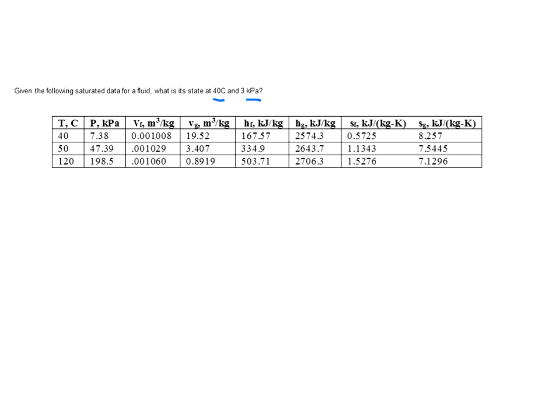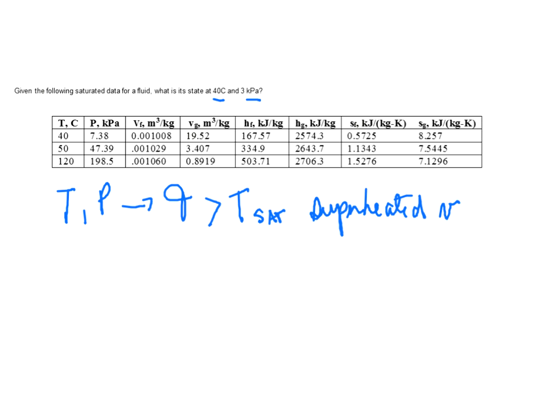Let's see this with an example. Here we have a fluid — in this case H2O — and it's asking what is the state or the phase at 40 degrees Celsius and 3 kilopascals. The information given is under saturated conditions. We can see it in two ways. If you have a given temperature and a given pressure, and your temperature is larger than the saturation pressure, then you know it's going to be superheated. In terms of pressure, if your pressure is less than P-SAT, that's the condition of superheated.